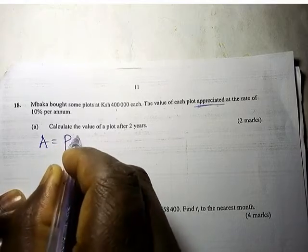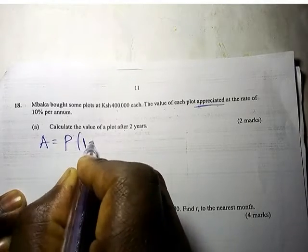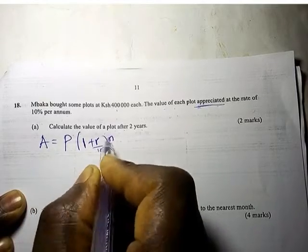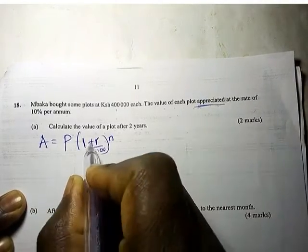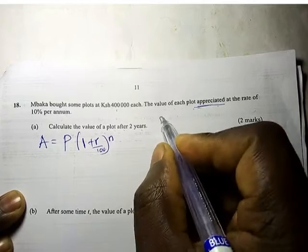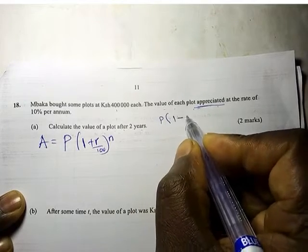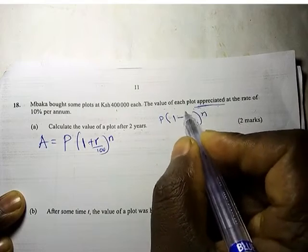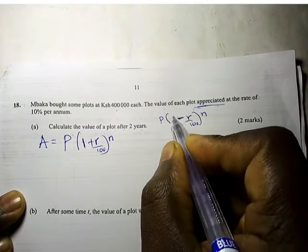For depreciation, you use principal into 1 minus R over 100. If you depreciate, you use this formula with minus, but if it is appreciation, you use this one with plus.